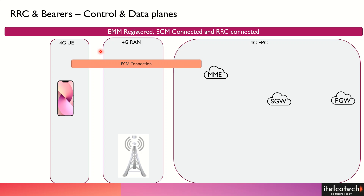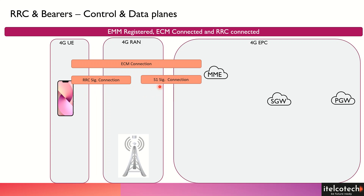When the user is in RRC connected mode, there is an ECM connection already built up. So there is NAS signaling happening between the user and the MME. In this case, there is RRC signaling already present between the user and the base station, and there is S1 signaling going between the eNodeB and the MME.